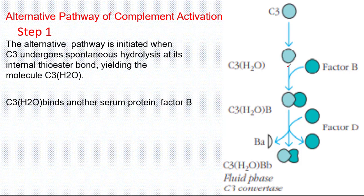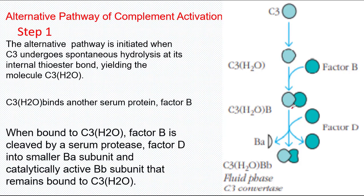C3H2O molecules bind another serum protein called Factor B. When bound to C3H2O, Factor B is cleaved by an enzyme called Factor D into BA subunit and BB subunit. BA subunit diffuses away and BB subunit remains attached to the C3H2O, forming a Fluid Phase C3 Convertase.